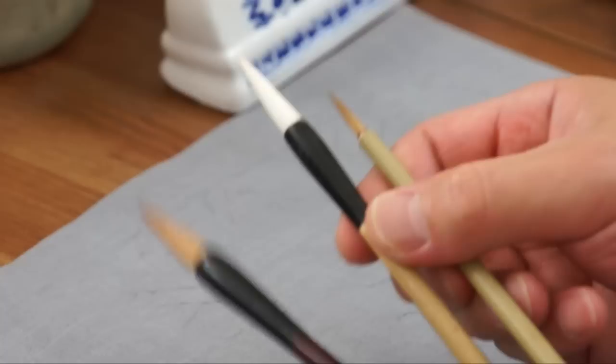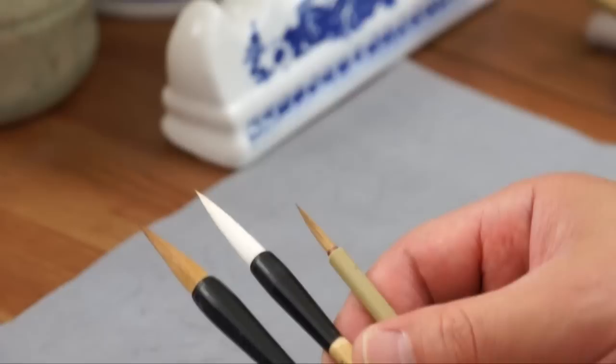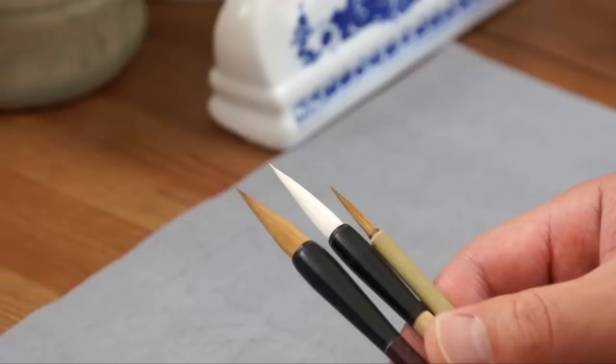The second one is a soft hair brush made of goat or sheep hair. It is good to paint flower petals and wash colors on the leaves.